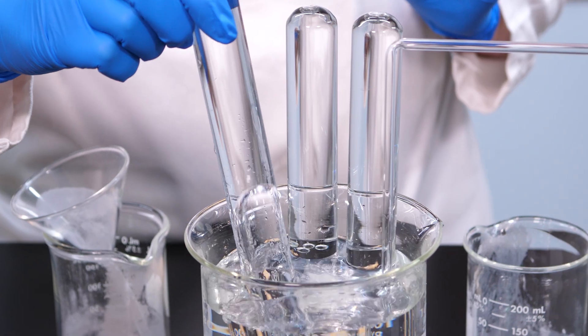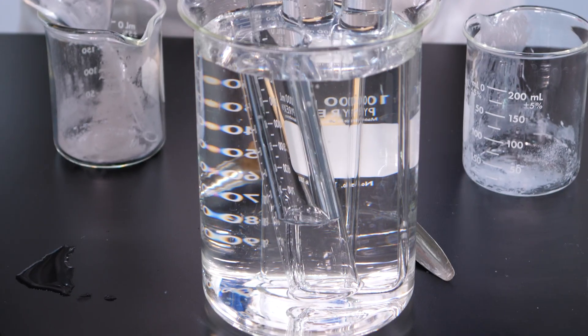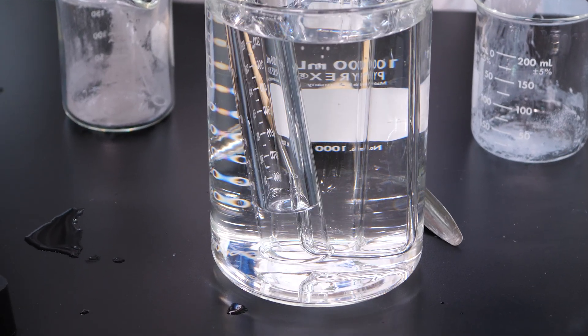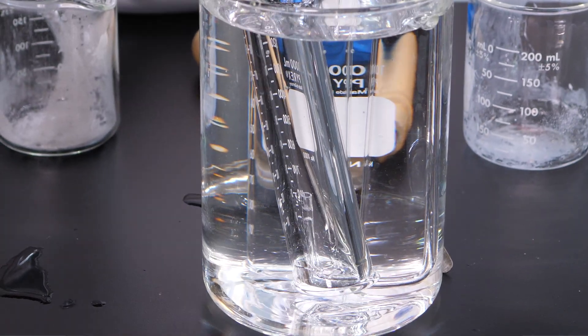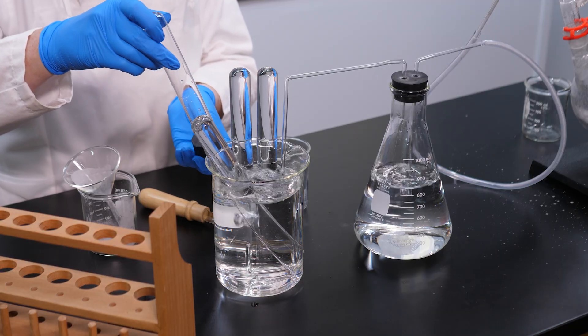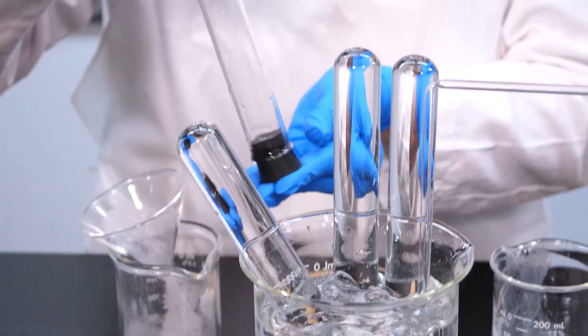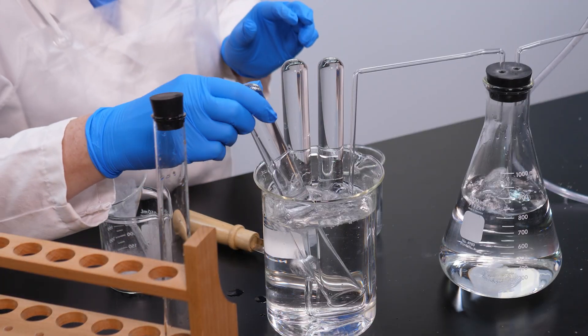After filling a test tube with water, we close off the open end and invert the test tube with the open end under the surface of the water. While keeping the open end of the test tube under water, we move the test tube until it is directly over the glass tube. The bubbles of hydrogen gas displace the water in the test tube. After all the water has been displaced from the test tube, we lift it out of the beaker and close it off with a stopper. We repeat the process with three more test tubes.